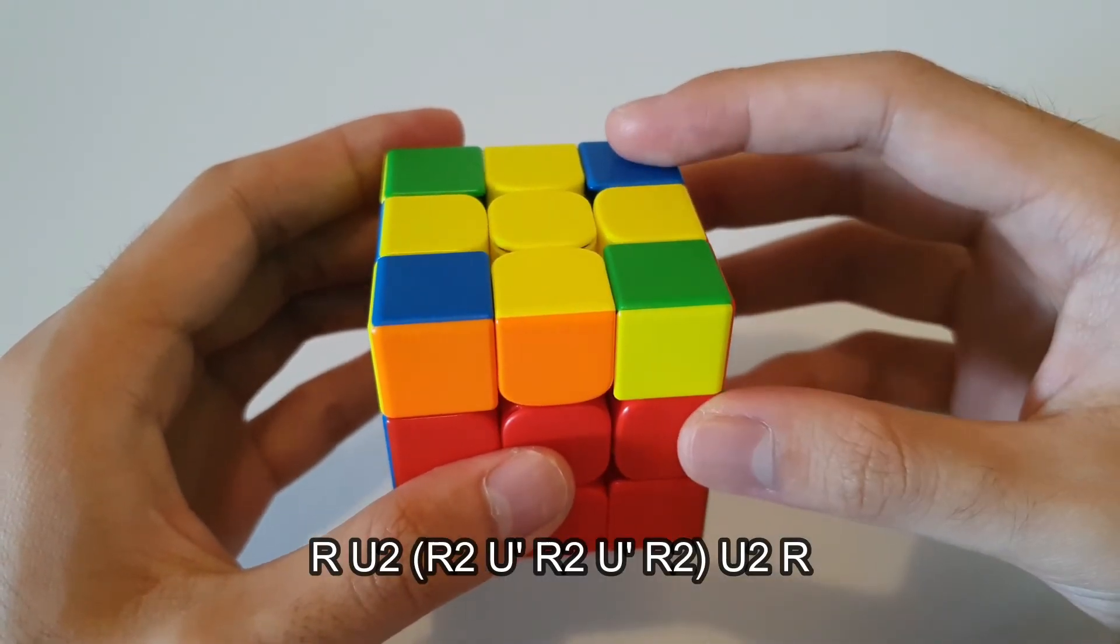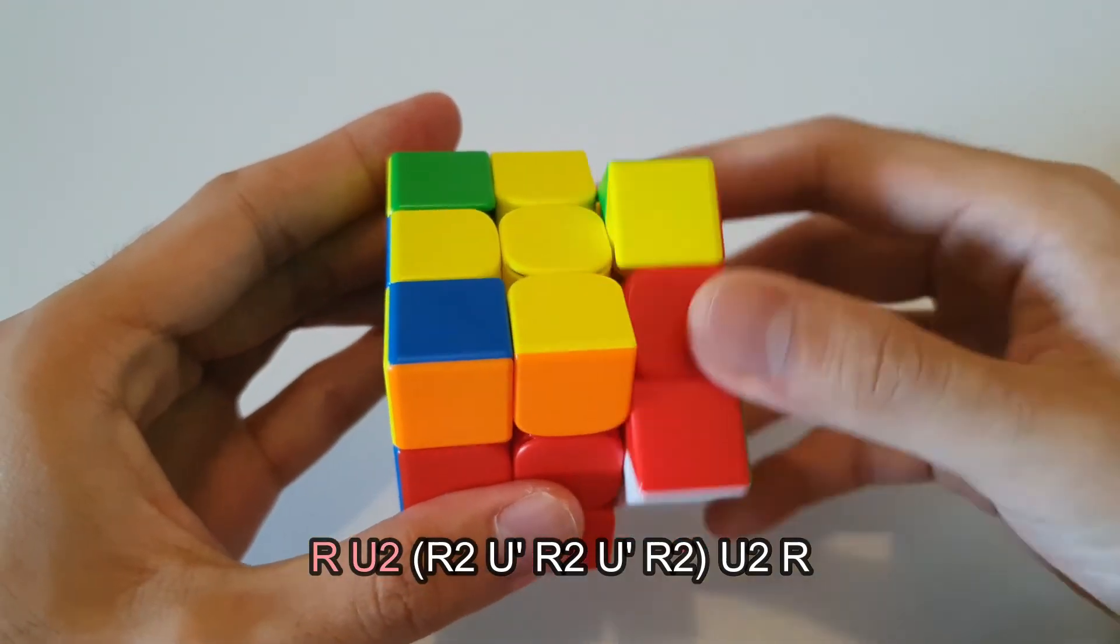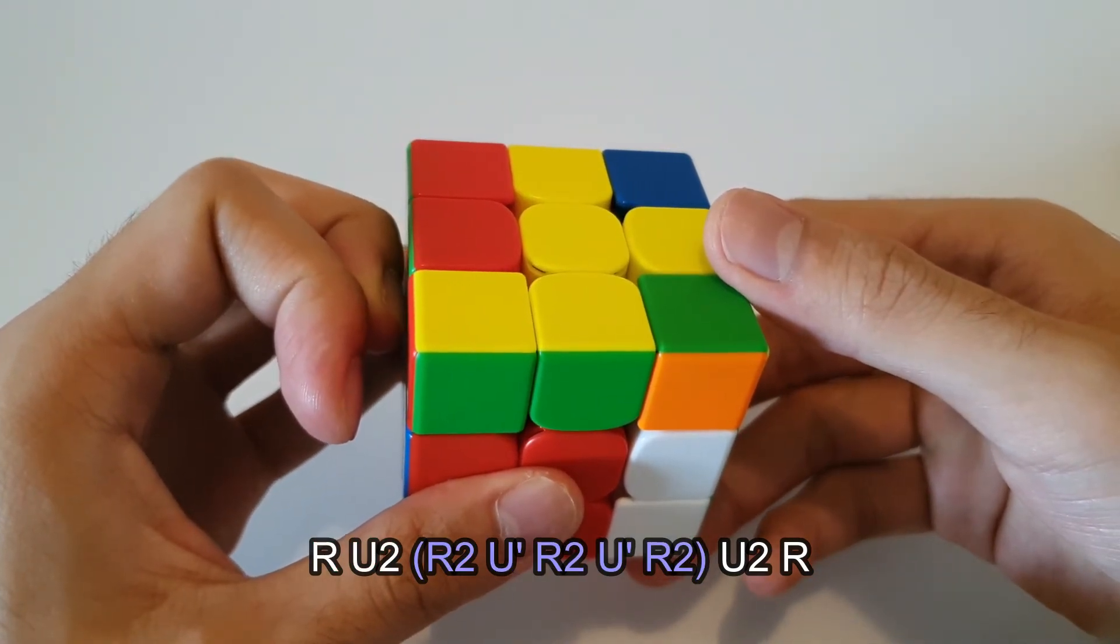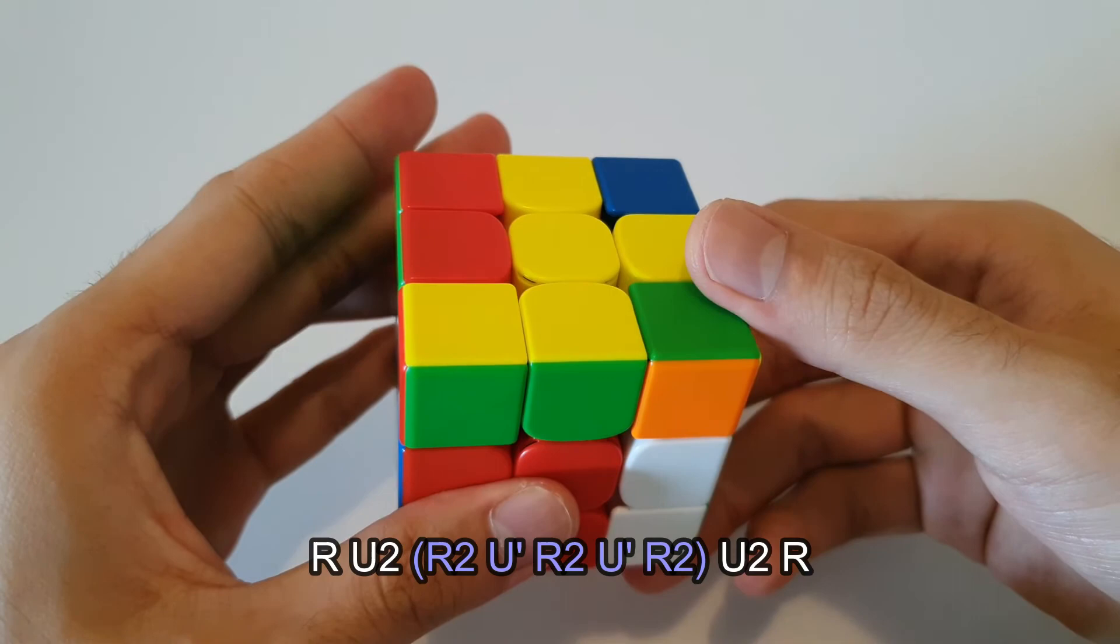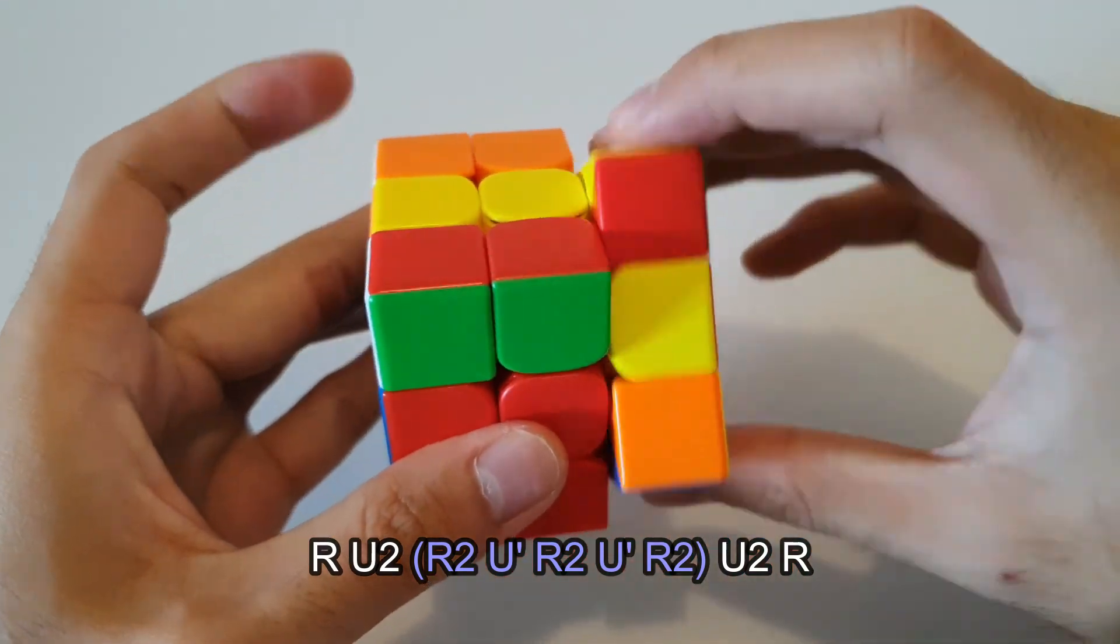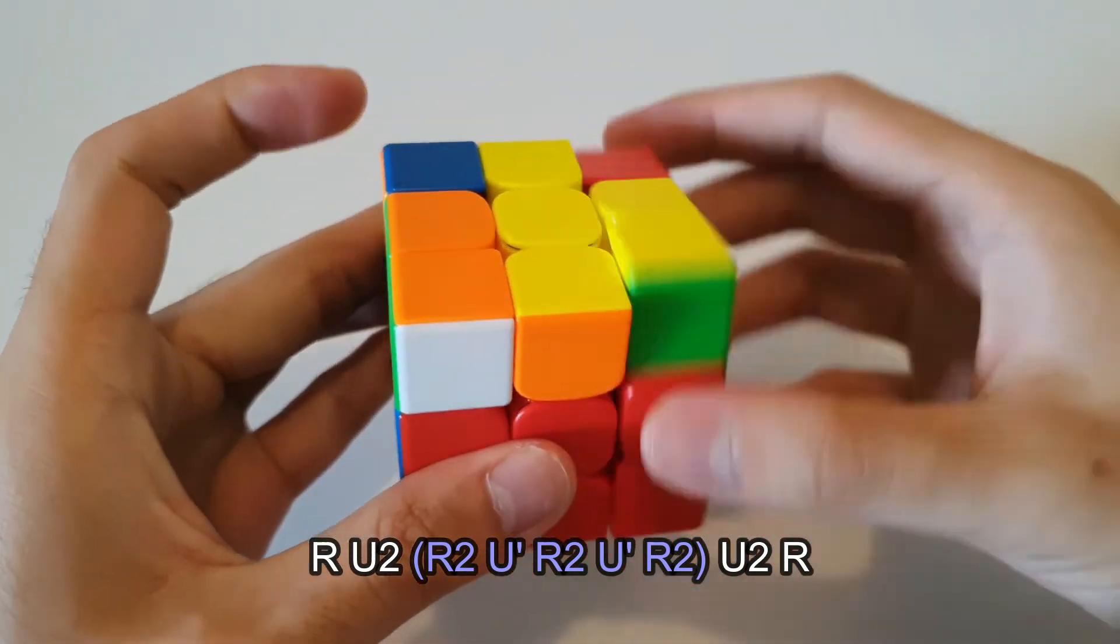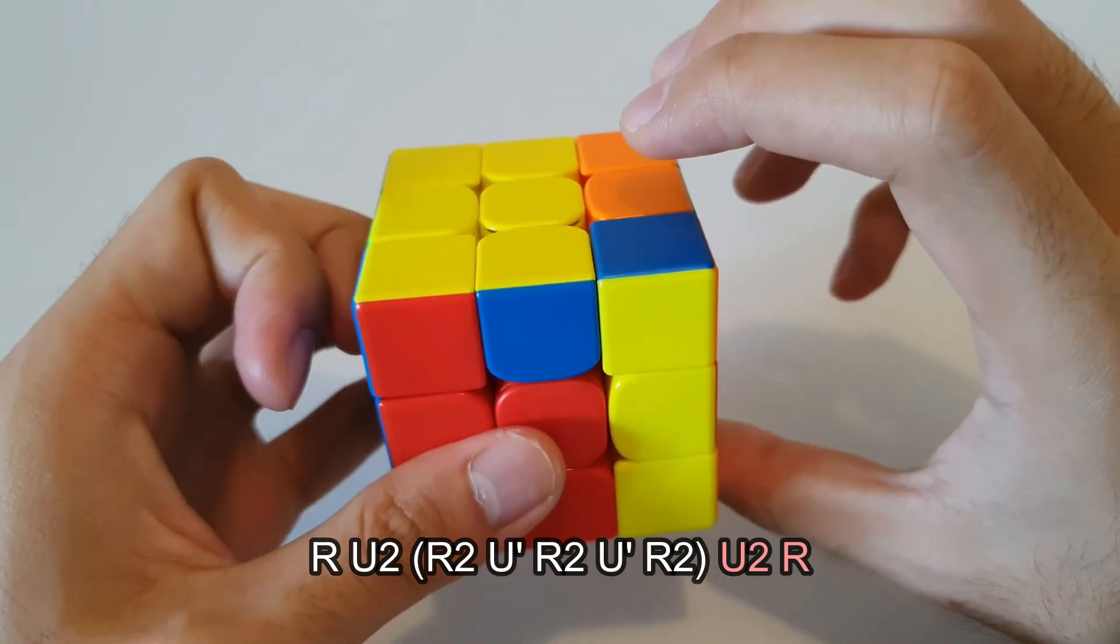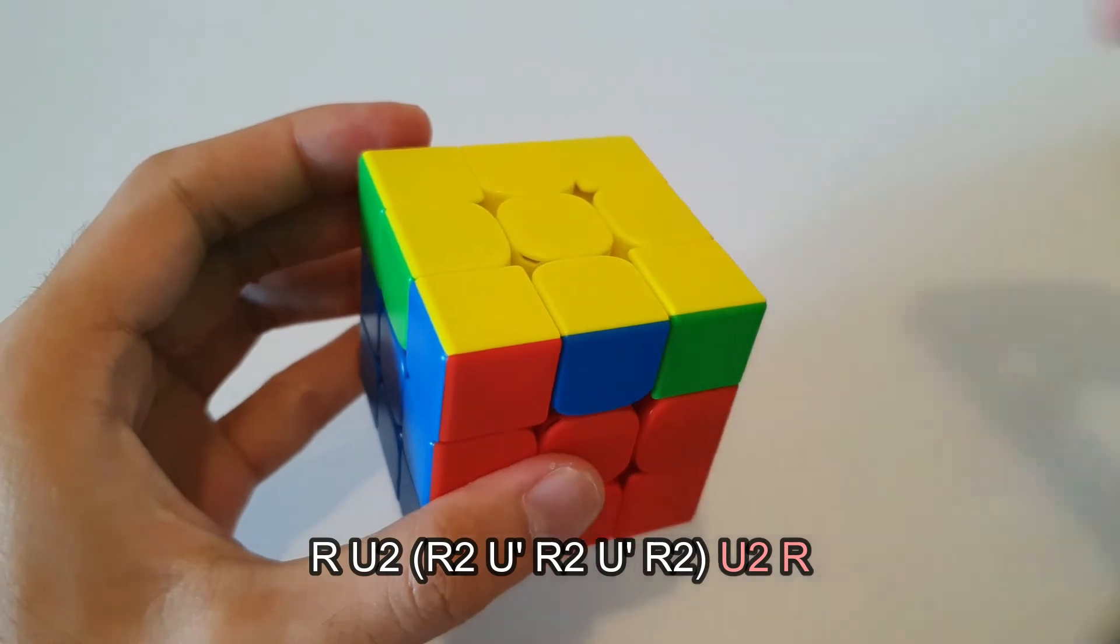So a nice way to remember this algorithm is that it starts off with an R U2, and from this point onwards, it's alternating R2s and U'. So R2, U', R2, U', R2, and at the very end, it ends off with a U2 followed by an R, and that is the algorithm.